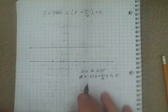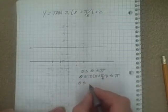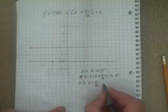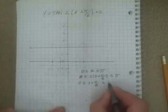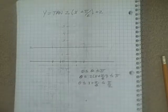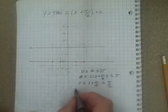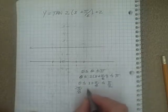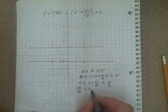So divide by 2 on both sides. Okay, 0 divided by 2 is still 0. And then subtract π/6. Subtract π/6. Subtract π/6. This is our period.